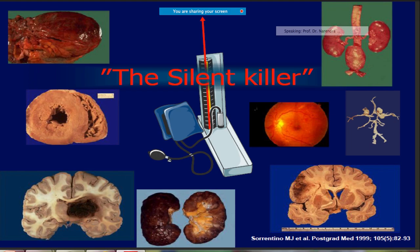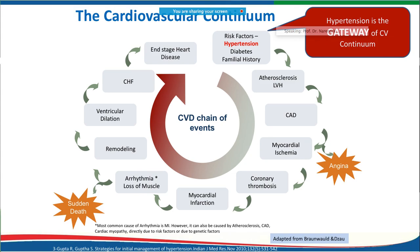Unlike acute communicable diseases, the morbidity and mortality from these lifestyle diseases tend to happen over time, causing problems in the heart, brain, kidney, eyes, and other organs. This is what is called the cardiovascular continuum — one risk factor leads to another.